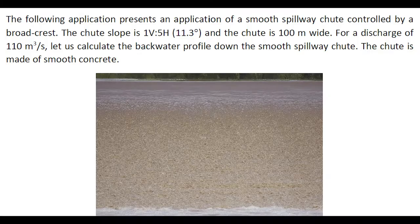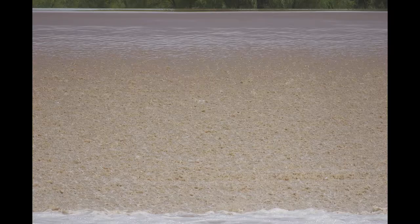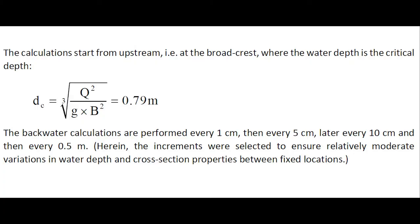The following application presents an example of a smooth spillway chute controlled by a broad crest. The chute slope is 11.3 degrees and the chute is 100 meters wide. For discharge of 110 cubic meters per second, let us calculate the backwater profile down the smooth spillway chute. We will assume that the invert is made of smooth concrete.